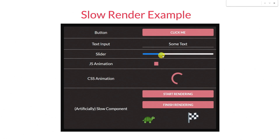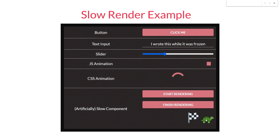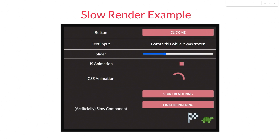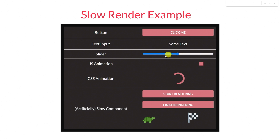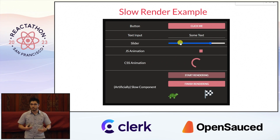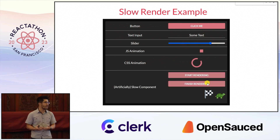There's a bunch of steps you see here, so let me explain part by part. At first, notice that we have some examples of the fast parts — a button, a text input, a slider. When we interact with these fast parts, they respond to our interactions instantly, with no delay at all. But at the very bottom of this component list, we also have a slow component represented by the turtle and the checkered flag. This component has been slowed down artificially. Whenever we click the Start Rendering button, it starts rendering, and it only finishes when it clicks the Finish Rendering button.